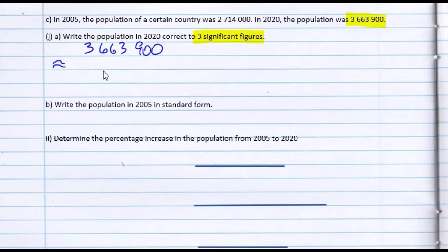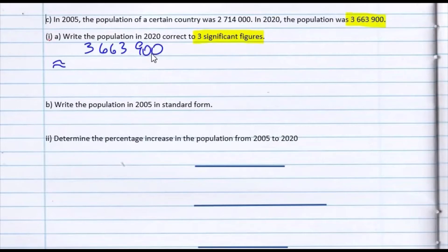We need to remember that all non-zero digits are significant. Zeros in between significant figures or non-zero digits are also significant. So if we look at this number, we have 1, 2, 3, 4, 5 significant figures because they are non-zero digits. These zeros at the end may or may not be significant, depending.